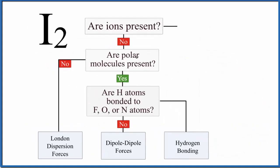The next question is: do we have polar molecules present? Well, with iodine it's just two iodine atoms bonded together covalently. They're the same atoms. When we talk about polarity, we're talking about a difference in electronegativity.